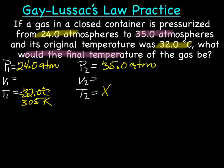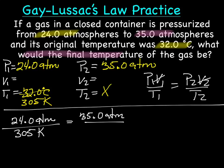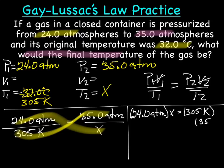Now we need to plug stuff into the formula, P1V1 over T1 equals P2V2 over T2. This time we get to ignore the volumes. So let's plug stuff in. We're going to have our P1 is 24 atm divided by 305 Kelvin. And our P2 is 35 atm. And our T2 is x.